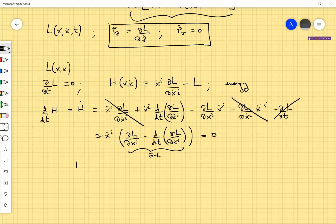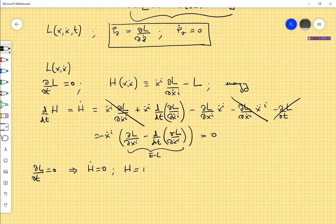Then the result is that in these conditions, H dot is zero. If the partial derivative of L with respect to t is zero, then H dot is zero, and the constant value that this H takes along a certain trajectory is the energy of the particle in that trajectory.